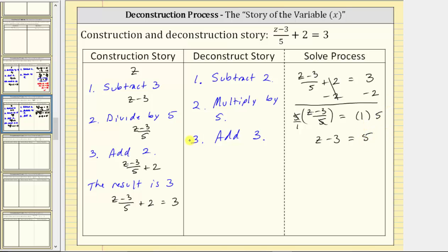Finally, the last step is to add three to both sides of the equation. Simplifying, minus three plus three simplifies to zero. We have z equals, and on the right side five plus three is equal to eight. The solution to the equation is z equals eight.